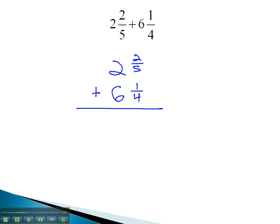And again, looking at the fractions first, we need to add them by finding a common denominator. The common denominator between 5 and 4 is 20.